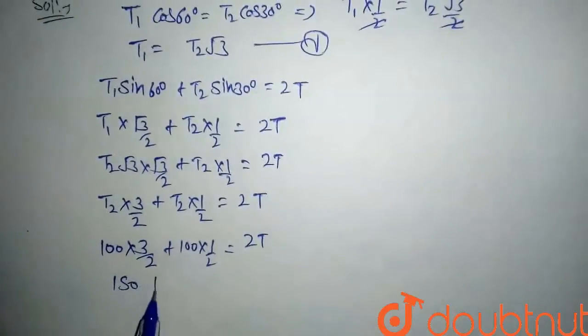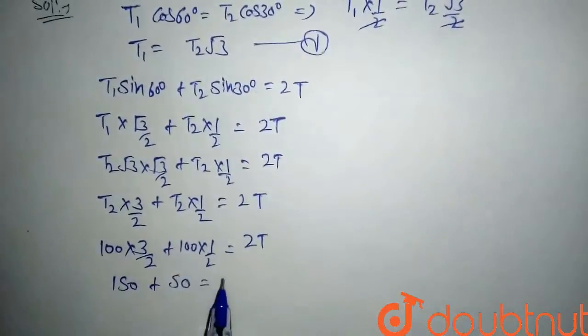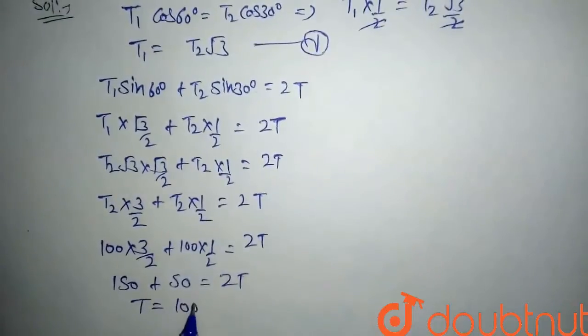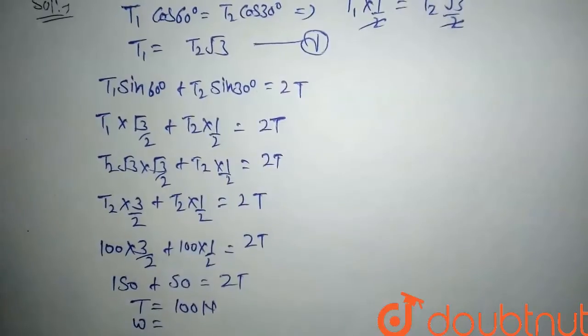So after solving it, this will become 150 and this will become 50, equal to 2T. So after calculating, T comes out to 100 Newtons, and this will be also the weight of block, so it will also be 100 Newtons.